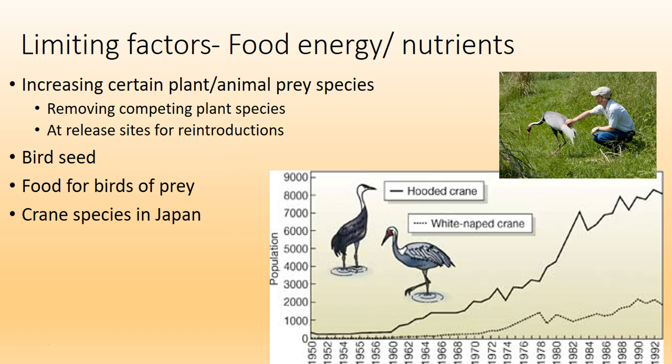We do this all the time with bird seed — we supplement bird feeding, although sometimes that works against them because hawks can use that as a spot to look for birds to eat. Here's a successful example: cranes in Japan. There are two species, the hooded crane and the white-naped crane. Their populations in the 50s were incredibly low, but once supplemental feeding started, those populations rose dramatically, especially the hooded crane.